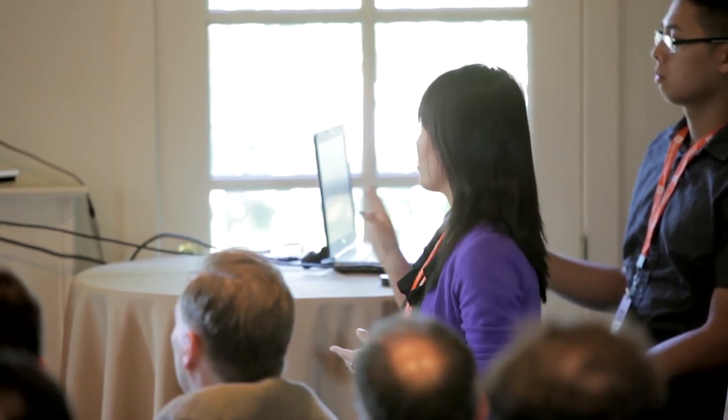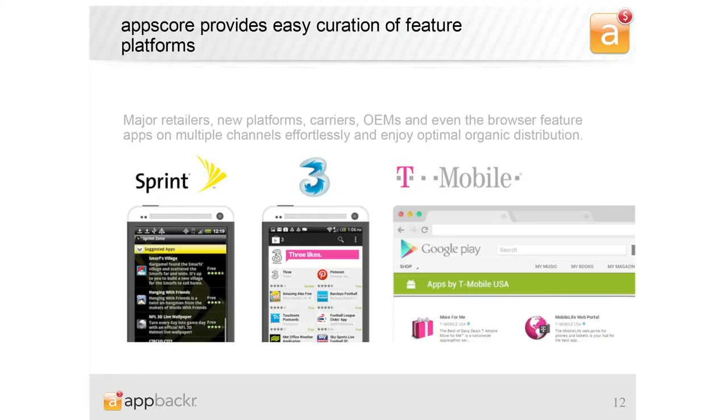Now we'll cover two examples of how the AppScore is currently used by our partners to help with distribution and recruitment. On one hand, we work with peer networks and companies with feature platforms that are interested in finding apps to feature and recommend to their user base, linking back to Google Play. Our algorithm provides an easy method for them to curate through all of the apps available in the store and recommend apps that may not be in the top 100 but that would really delight and entertain their users.